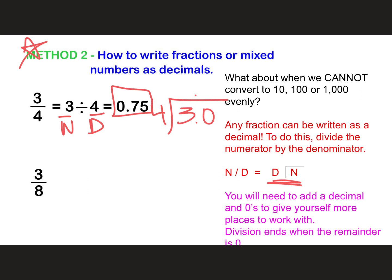Next one, three-eighths. Eight can't multiply into ten, hundred, or a thousand, so we're going to do long division. Numerator goes on the inside. Denominator goes on the outside. And again, you could also use your calculator, and you would enter it in as three divided by eight. And when we do that, whether we use the long division method or the calculator method, if we enter it as three divided by eight, we are going to get 0.375, or 375 thousandths.